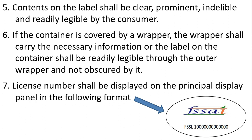If the container is covered by a wrapper, the wrapper shall carry the necessary information, or the label on the container shall be readily legible through the outer wrapper and not obscured by it. The license number shall be displayed on the principal display panel in the following format.